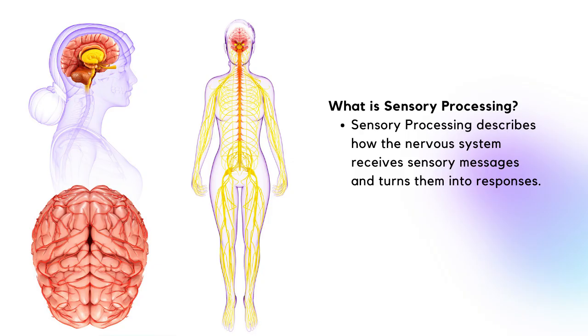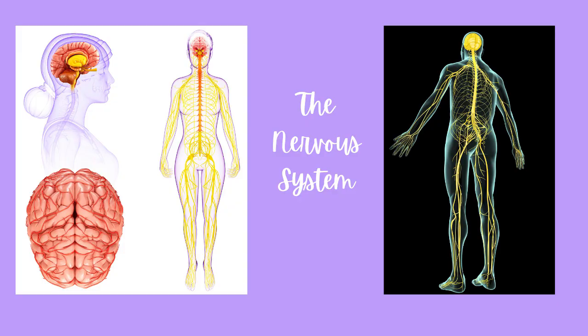Sensory processing describes how the nervous system receives sensory messages and turns them into responses — so it's receiving, organizing, and then responding. The nervous system itself is the road that things travel through, communicating from the rest of your body to your brain. When there's a disruption in any of this, that's sensory processing disorder, which is a huge umbrella with all these little things underneath it.